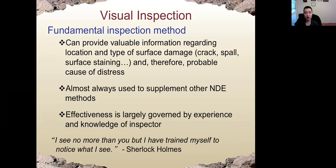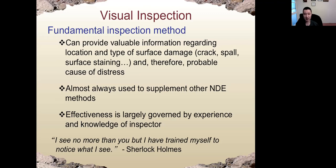Visual inspection is almost always used to supplement other NDT methods, and its effectiveness is largely governed by the experience and knowledge of the inspector. For example, cracks in concrete can be caused by many reasons — shrinkage, ASR (alkali-silica reaction), corrosion of rebar, sulfate attack, or freeze-thaw damage. Based on the patterns and locations of the cracks and other information, we can identify possible reasons for the deterioration of concrete.